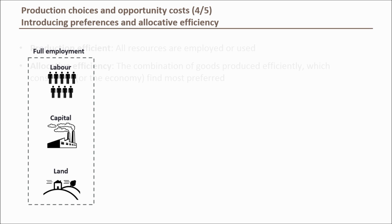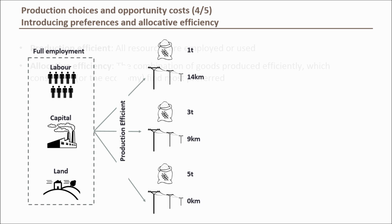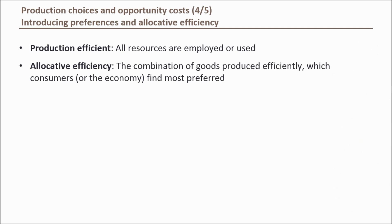If we choose three random production efficient combinations of wheat and power lines, we still do not know which combination out of all the production efficient combinations is the best one. The preferred production efficient point is called the allocative efficient point, because the point is productive efficient and the allocation of the goods produced is also efficient — meaning the allocation which maximizes the benefit of the economy.